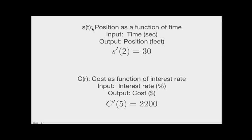So in this first example, let's suppose I have a function s of t. And again, it's giving me position as a function of time. Let's suppose time is in seconds and the output position is in feet. Suppose also that I knew that s prime of 2 is equal to 30.